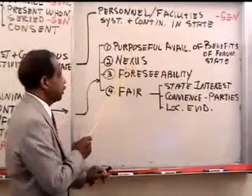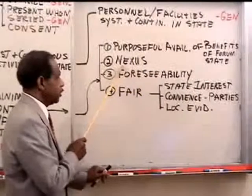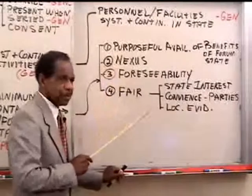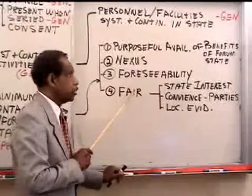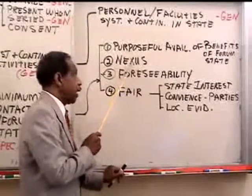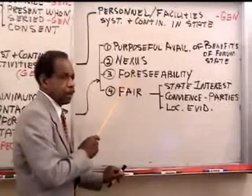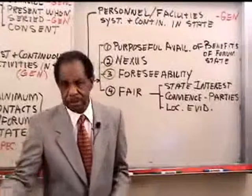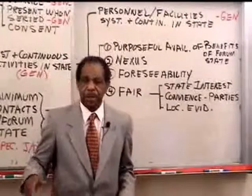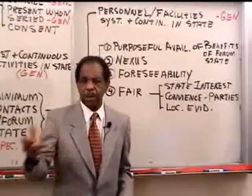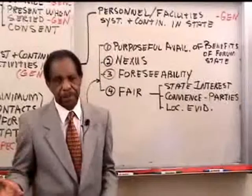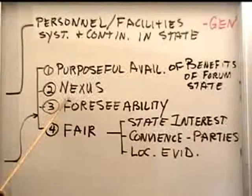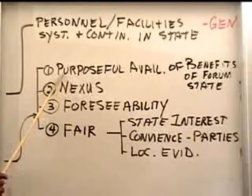Secondly, nexus: the cause of action must arise out of the purposeful availment. In the car accident case, the person was using California roads and the accident arose from using those roads. The widget seller was selling into California, and one of the widgets broke and someone got injured here. So the cause of action must arise from the purposeful availment. These are the first two requirements in deciding whether to exercise specific jurisdiction.